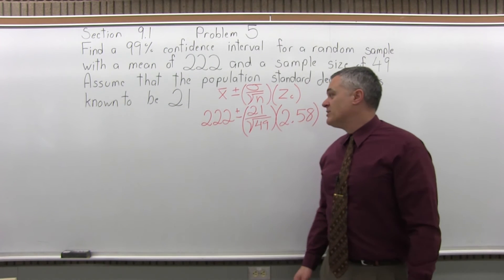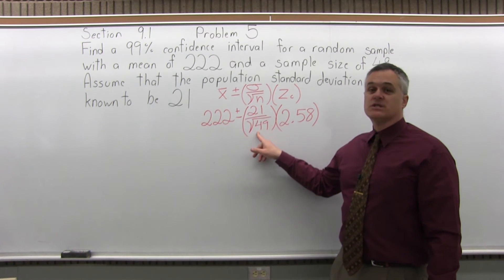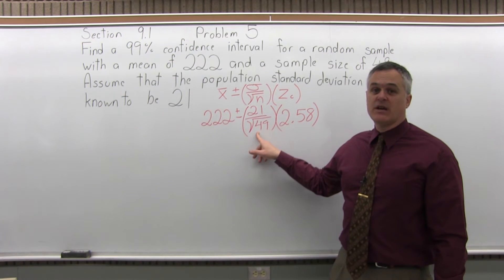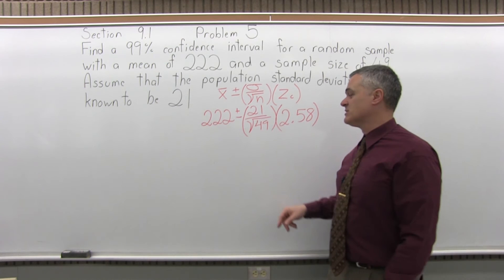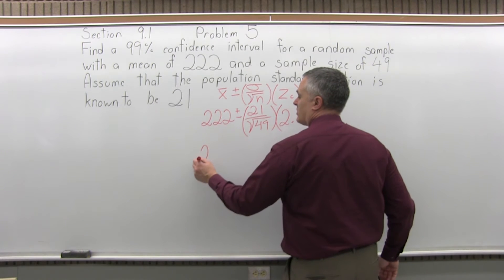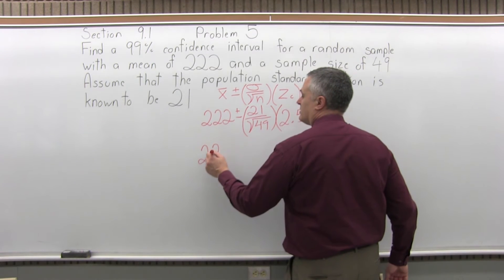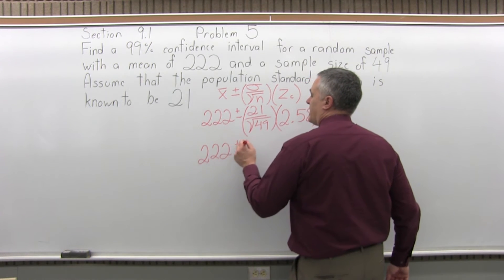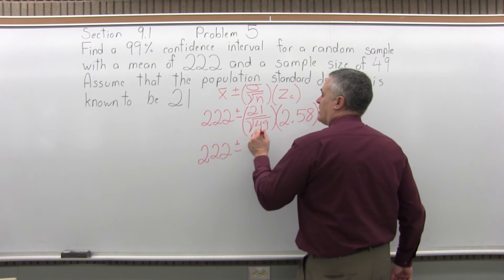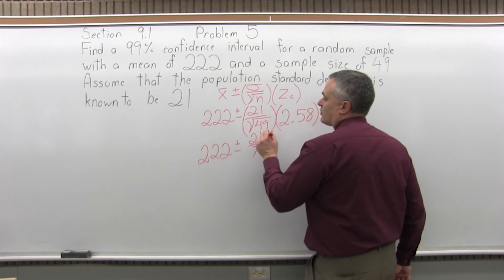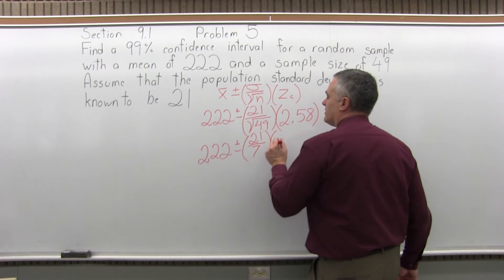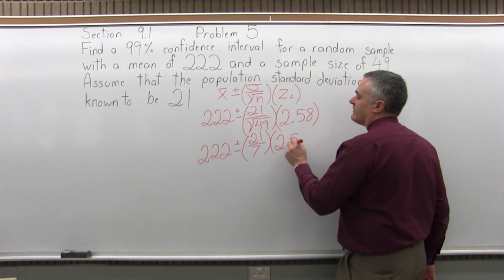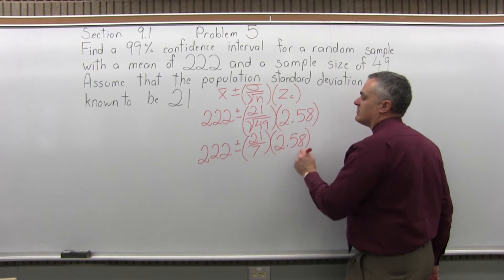To do the math, what you need to deal with first is the square root in the denominator. Square root of 49, which is 7 — 7 times 7 is 49. So the first step: I'm going to write 222 plus or minus 21 over 7, instead of 21 over square root of 49, and leave the 2.58 on the end for a minute.